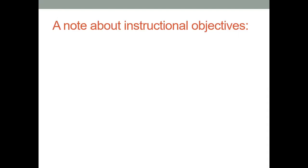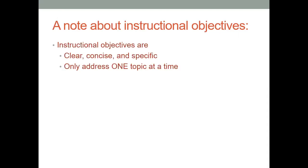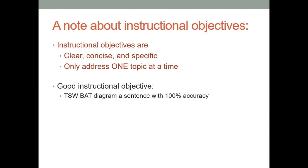A note about instructional objectives: they are always clear, concise, and specific, and they only address one topic at a time. Here's a good instructional objective: 'The student will be able to diagram a sentence with 100% accuracy.' We've got the action verb 'diagram,' the topic 'a sentence,' and the criterion '100% accuracy.' It's clear, concise, to the point — one action verb, one topic. If you don't want to include the accuracy level, that's optional.